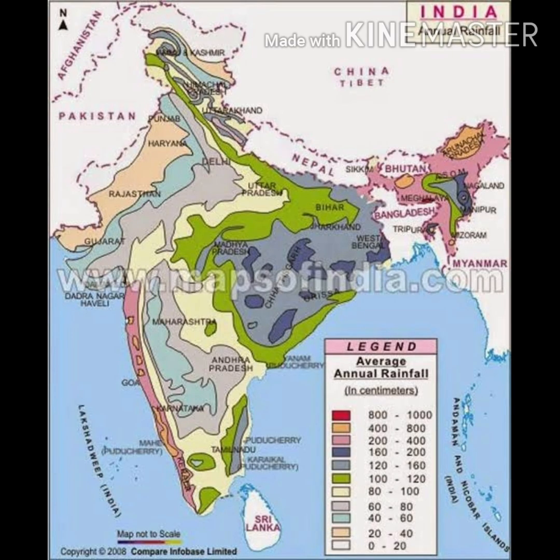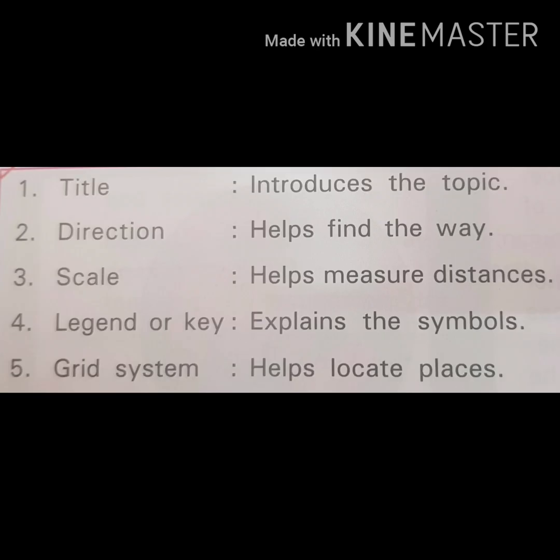Next is the thematic map. Thematic maps represent particular features like the vegetation of an area, distribution of minerals and industries, etc.